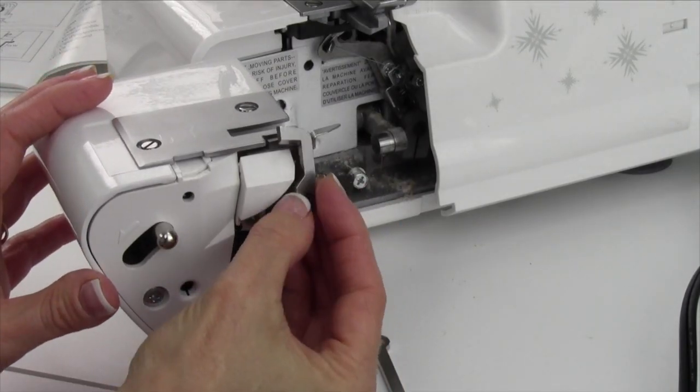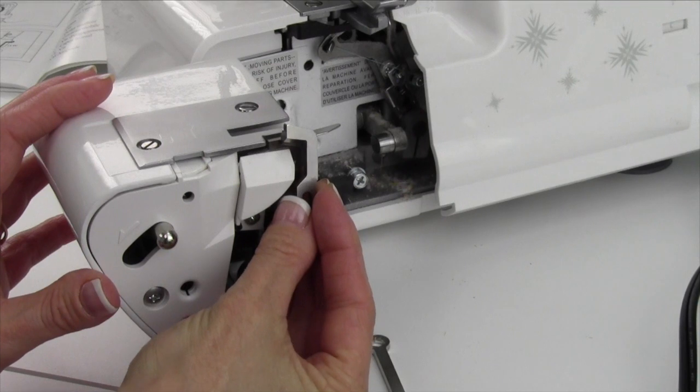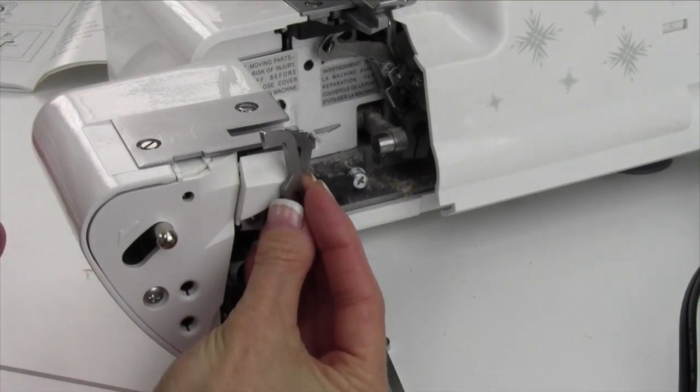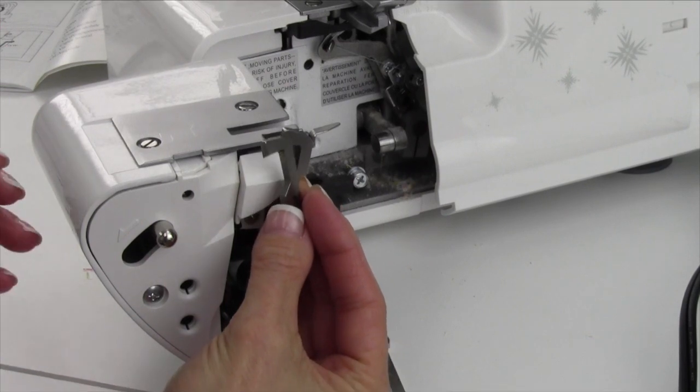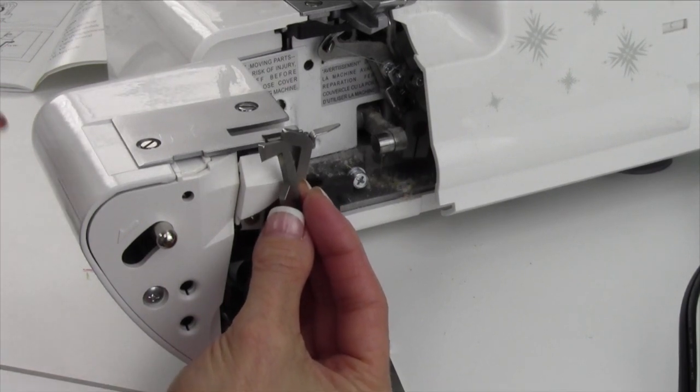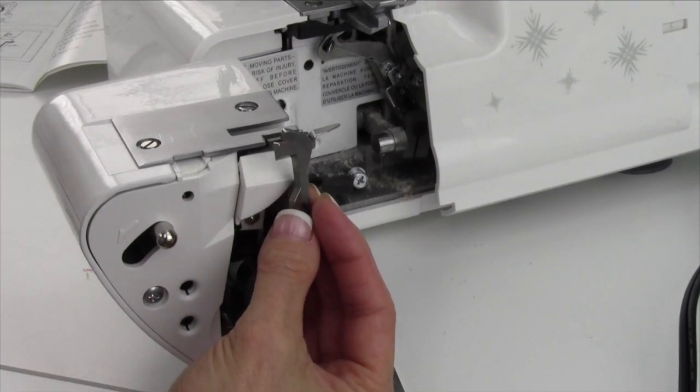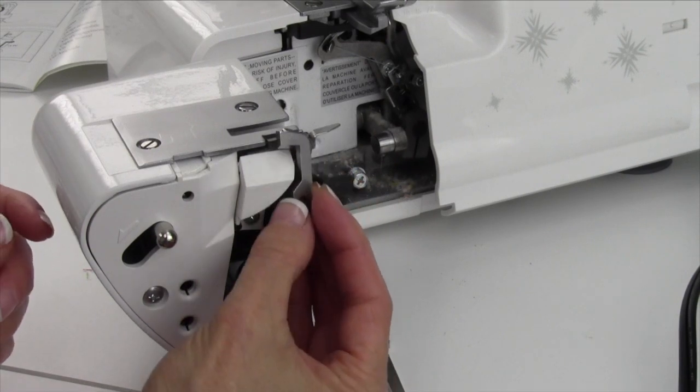There will be a time where your moving cutter will actually get dull. That would be from cutting fabrics that are not man-made. We're talking about polyesters, nylon, tricot, anything that's got that polyester in it will dull these knives quicker.